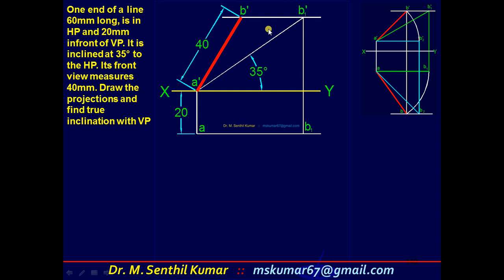Now the next step is draw a projector through b dash, then with a as center, a b1 as radius, draw arc. Because if you see here, a b in the dummy picture, a b is a top view length that is also equal to a b1, so we have drawn this here. With a as center, a b1 as radius, draw arc. Thereby you obtain b. Draw line joining a b, thereby you will be completing the final top view.